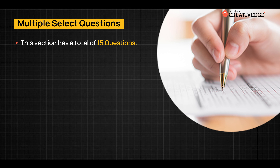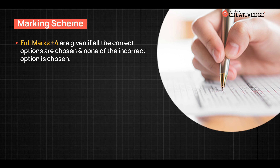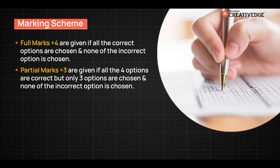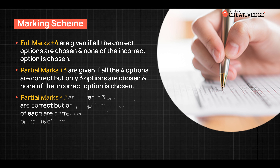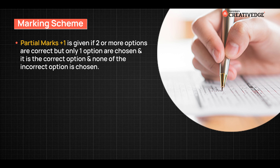The second type is Multiple Select Questions. This section has a total of 15 questions. These questions may have one or more than one correct answer. The marking scheme is as follows: Full marks of +4 are given if all correct options are chosen and none of the incorrect options are chosen. Partial marks of +3 are given if all four options are correct but only three are chosen and none of the incorrect options are chosen. Partial marks of +2 are given if three or more options are correct but only two options are chosen, both of which are correct and none of the incorrect options are chosen. Partial marks of +1 are given if two or more options are correct but only one option is chosen and it is correct, with none of the incorrect options chosen.